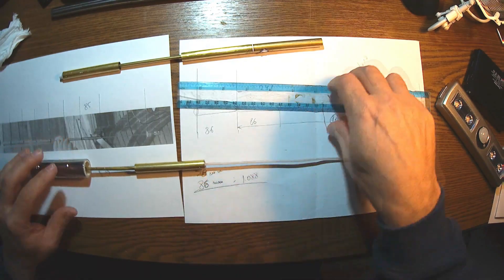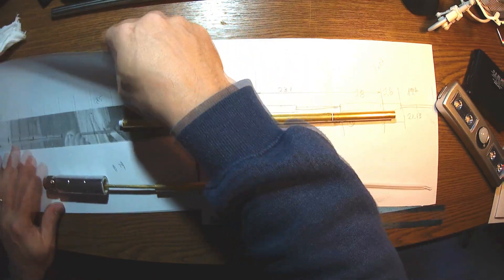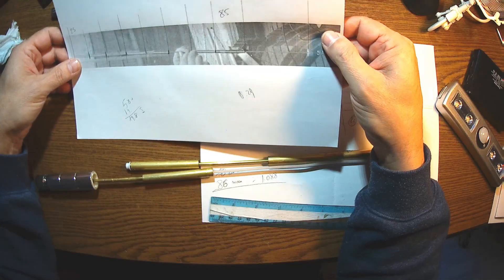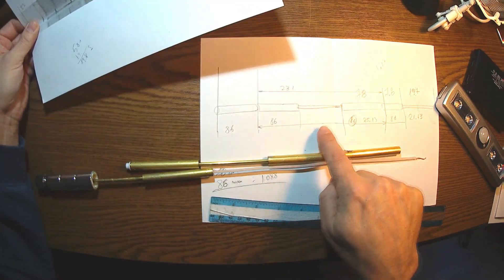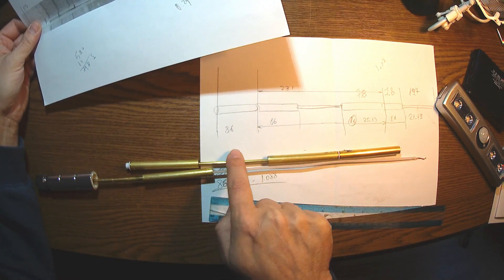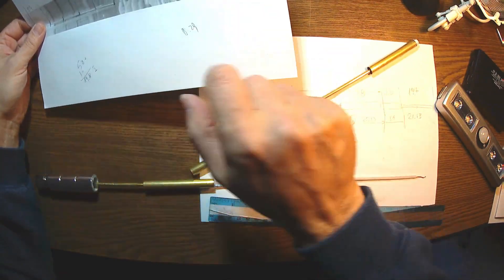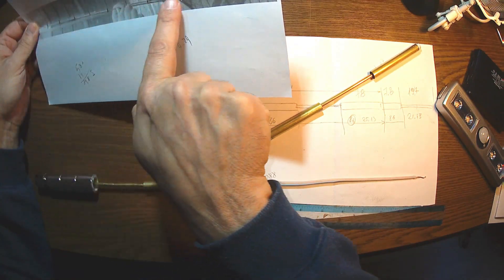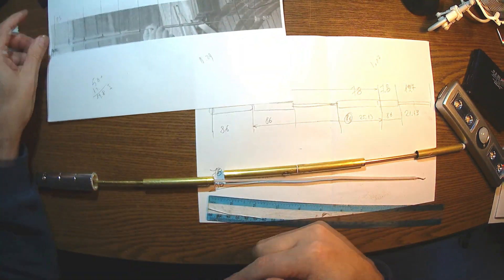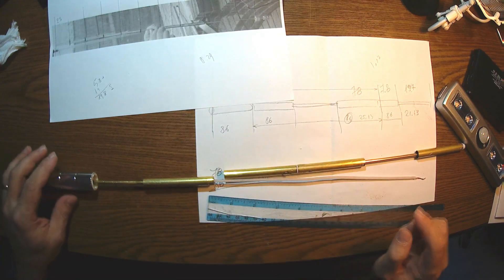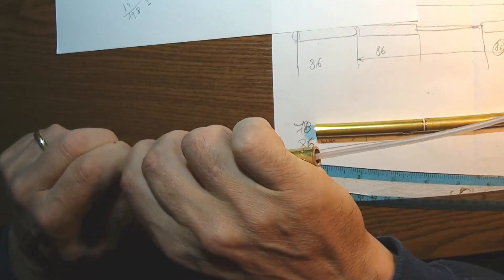So this one should be 25.13. This one down here should be 21.43. I observed the MikroTik antenna has almost the same structure. This one has six sectors, this one only has four. It's done the other way, upside down, and I'm going to start cutting these tubes here.